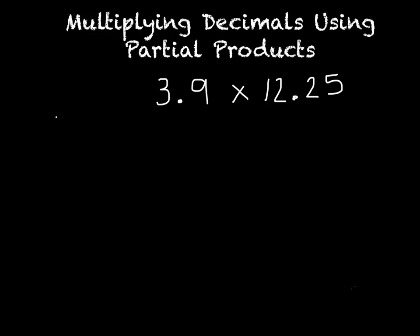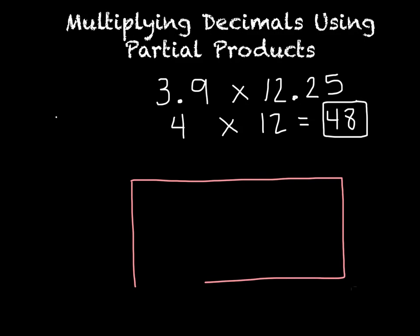All right, real quick. Let's see. 3.9. So I'm going to estimate first, so that's 4. And 12.25 is 12. And 4 times 12 is 48. So we think our answer will be close to 48. Then I'm going to stretch out everything. I'm going to draw a box. It's going to be a little longer. If we get rid of the decimal place, we do 30 plus 9. And over here, this is why it's tricky. Do 1000, big number, plus 200, plus 20, plus 5.